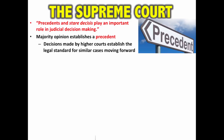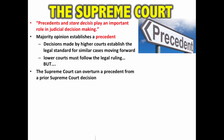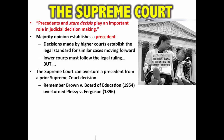Lower courts must follow the legal ruling, but the Supreme Court can overturn a precedent from a prior Supreme Court decision — you're not bound by a legal decision forever. The best example of this is Brown v. Board of Education in 1954, which overturned the previous Supreme Court case of Plessy v. Ferguson. So precedents are very important, but they can be overturned by future Supreme Court decisions.